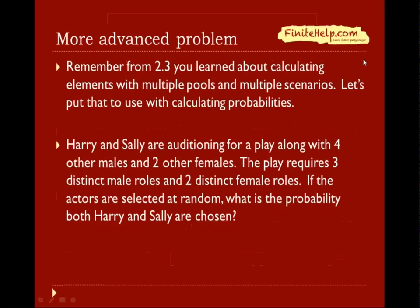We're going to do a more advanced problem involving multiple pools and multiple scenarios for calculating probabilities. Harry and Sally are auditioning for a play along with 4 other males and 2 other females. The play requires 3 distinct male roles and 2 distinct female roles. If the actors are selected at random, what's the probability that both Harry and Sally are chosen?